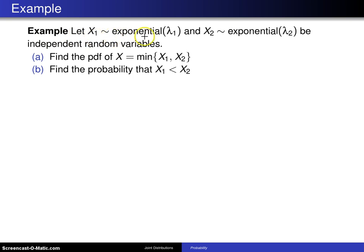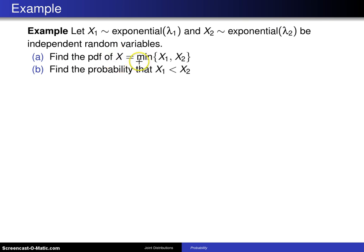Let X1 have an exponential distribution with rate parameter lambda 1, and let X2 also be exponential with rate parameter lambda 2, and those random variables are independent. Find the probability density function of the new random variable X, which is the minimum of X1 and X2, and then also find the probability that X1 is less than X2.